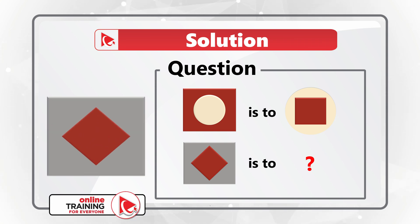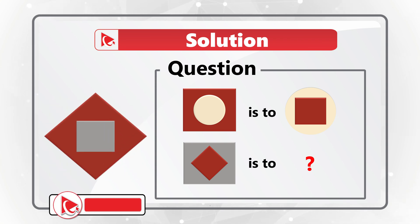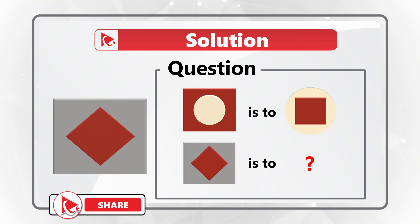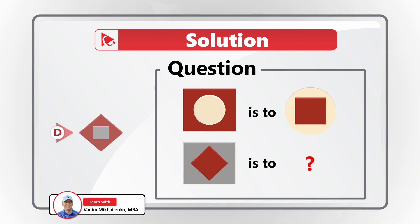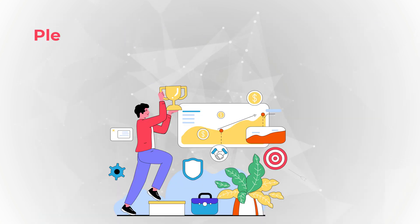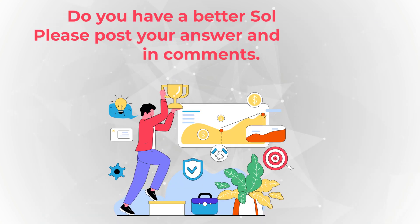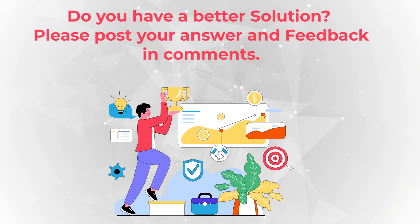To find the final answer, look for the gray rectangle that decreases in size and becomes the inner object in the foreground, while the red diamond becomes the larger object in the background. Hopefully you've nailed this question and now know how to answer similar problems on the test.